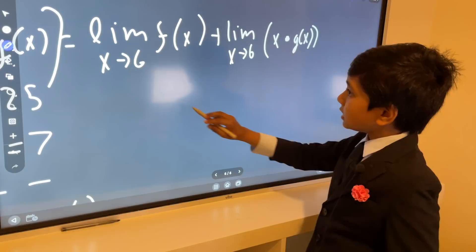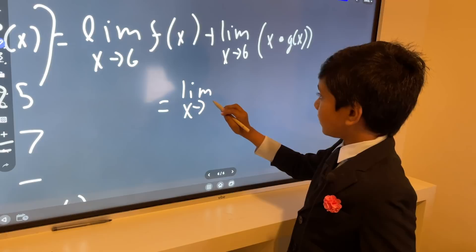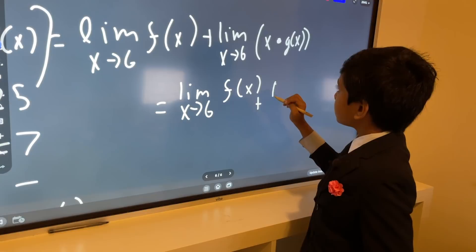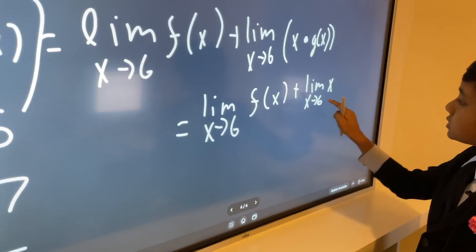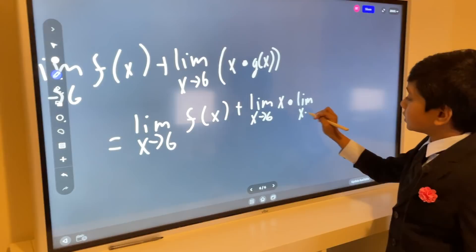Say that this can be reformed as plus the limit - that's the wrong place for the plus sign - plus the limit as x approaches 6 of x times the limit as x approaches 6 of g(x).